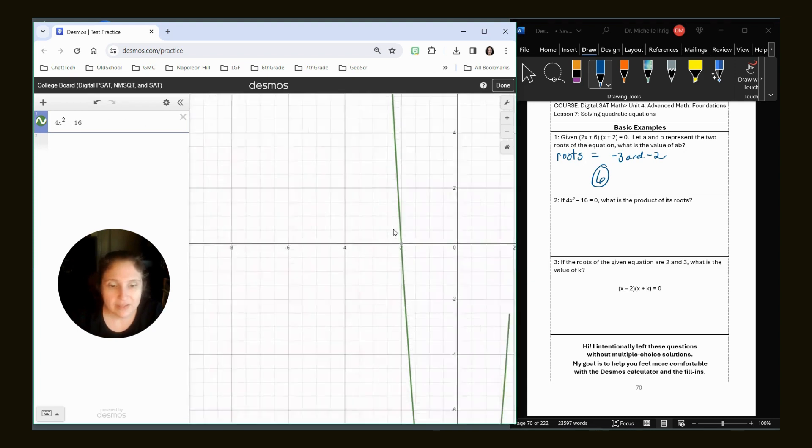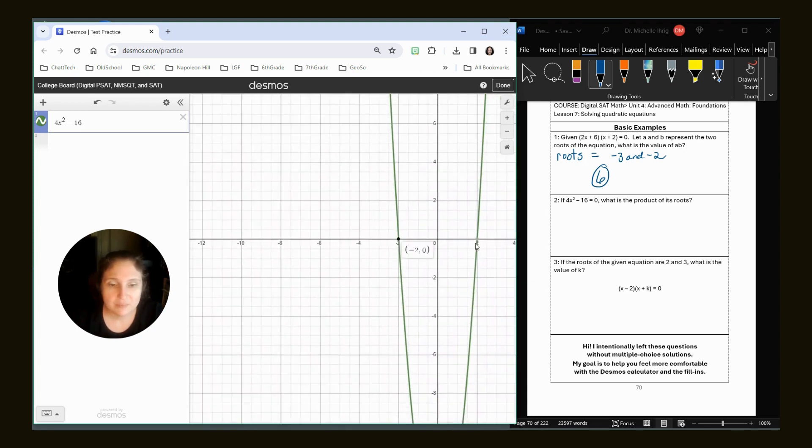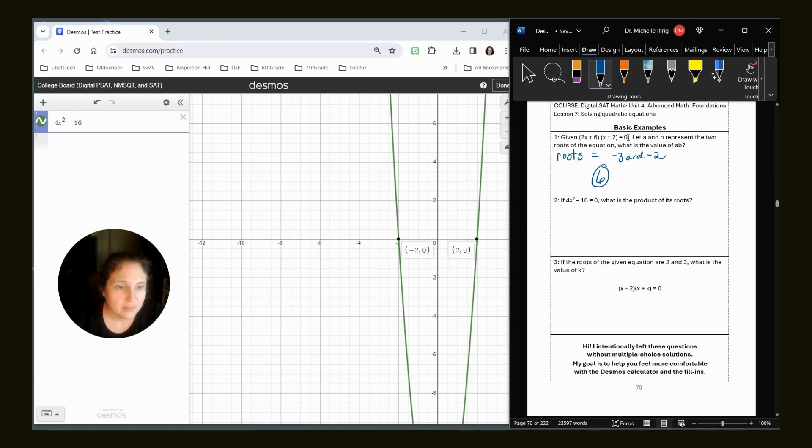We're just going to do 4X squared minus 16. I'm going to zoom out because those aren't technically roots if it says equals zero. So the correct word would be solutions.